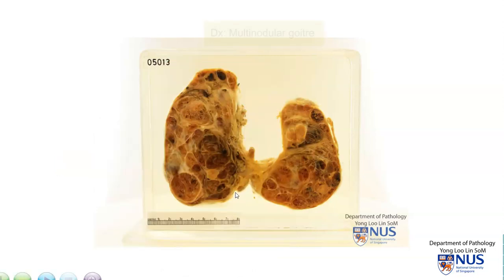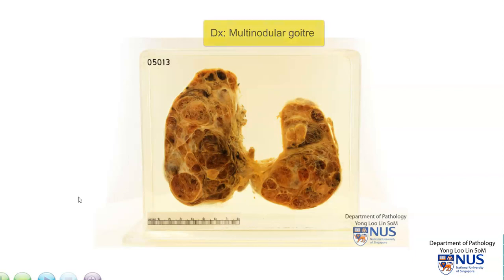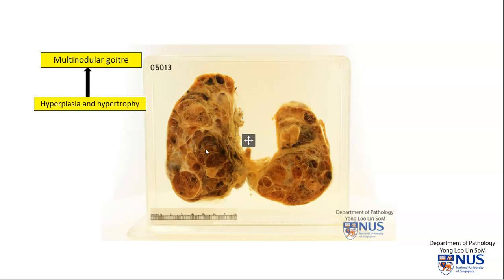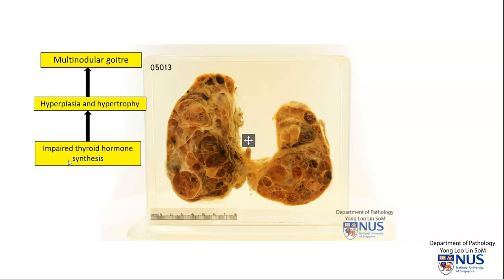This is an example of multinodular goiter. In multinodular goiter, the reason why there are multiple nodules involving most of the thyroid parenchyma is because there is hyperplasia and hypertrophy of the follicular cells, and this is usually due to stimulation by TSH, thyroid stimulating hormone, as a result of impaired thyroid hormone synthesis. The commonest cause of this is actually iodine deficiency.